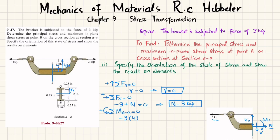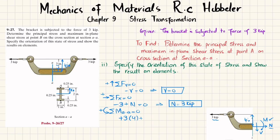The moment produced by 3 kips times 4 inches is counterclockwise, so it is positive. The moment equation gives M equal to 12 kip·inch.